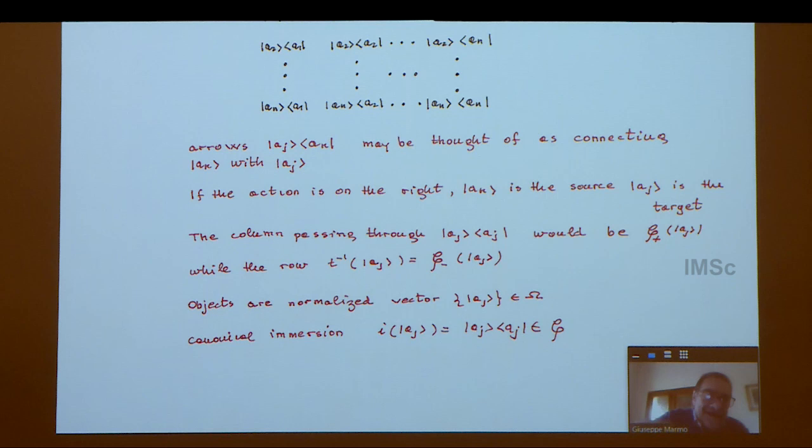You get a matrix associated with a groupoid. Each entry is a rank one operator in our language. The arrows may be thought of connecting AK with AJ. From here you can visualize immediately what is the inverse of the target map and the inverse of the source map—they will be rows or columns.